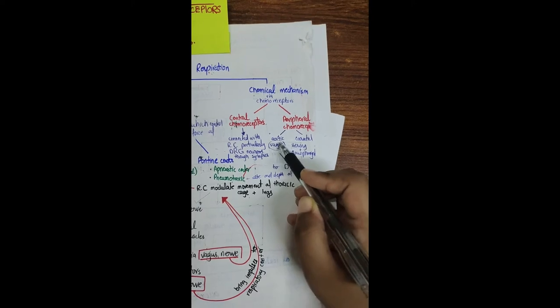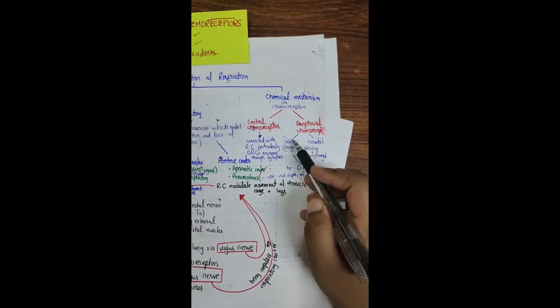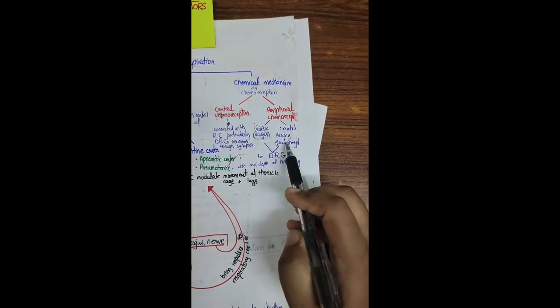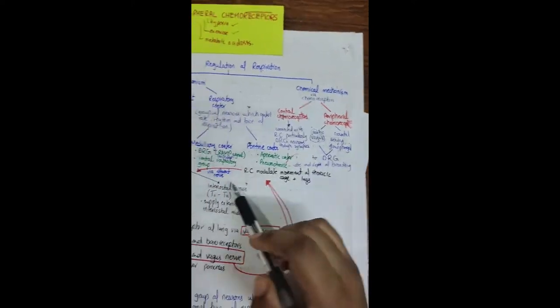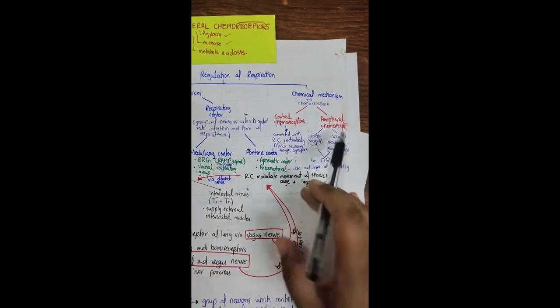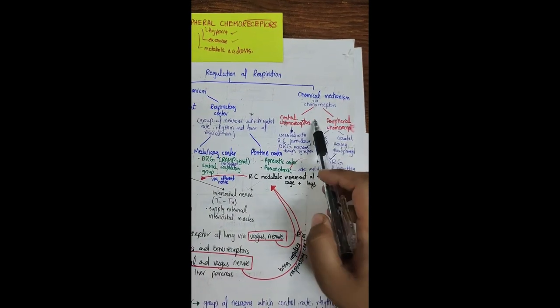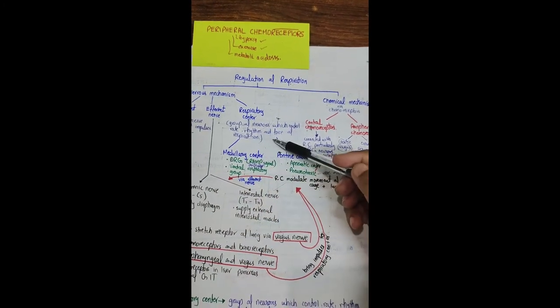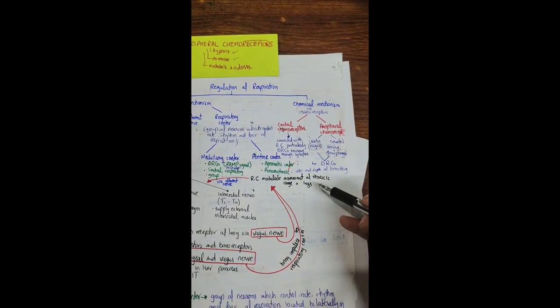This vagus nerve is a branch of aortic nerve which connects peripheral chemoreceptor to this respiratory center. Similarly, glossopharyngeal nerve is a branch of carotid nerve which connects the carotid body to this respiratory center. So the point is, chemoreceptors are connected with the respiratory center and ultimately respiratory center modulates the movement of thoracic cage and lungs.